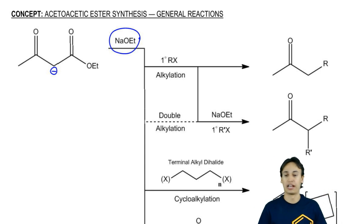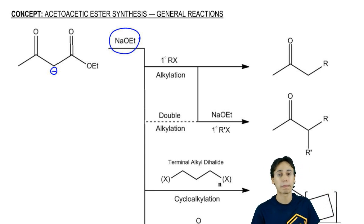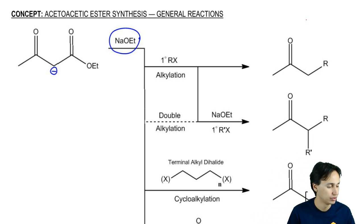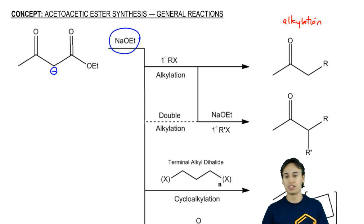Now we're just going to go one by one down these reactions. Once you have your enolate, if you react that enolate with an alkyl halide, you're going to get an alkylation. That just makes sense. We've done that plenty.